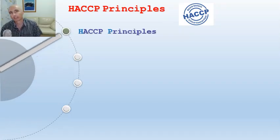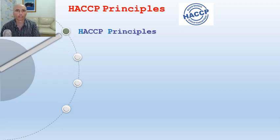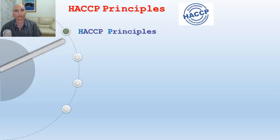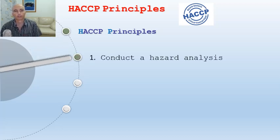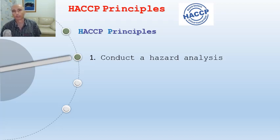Let's look at the HACCP principles, and throughout each step I'll talk about how it relates to the food production cycle. Number one: conduct a hazard analysis. In a kitchen, you would be looking at your cool rooms, your environmental hygiene, storage areas, and preparation areas.